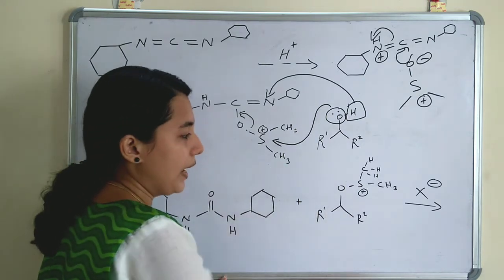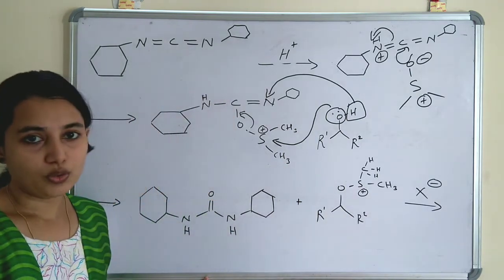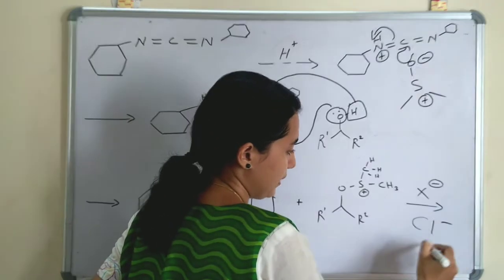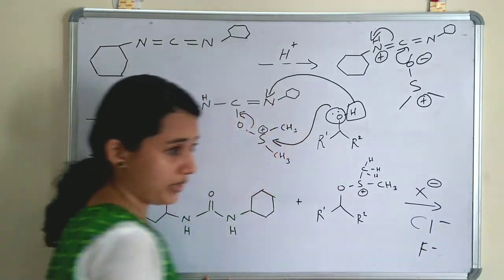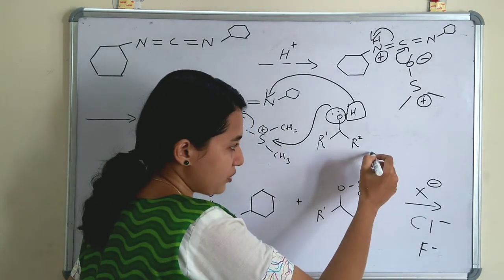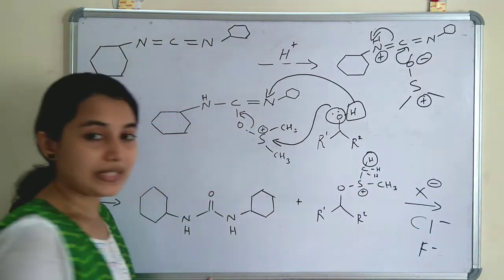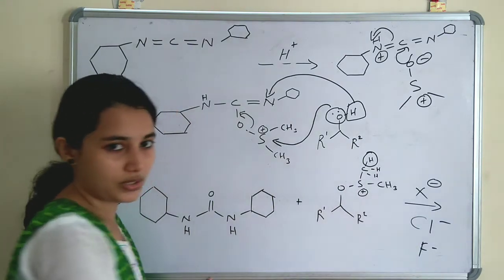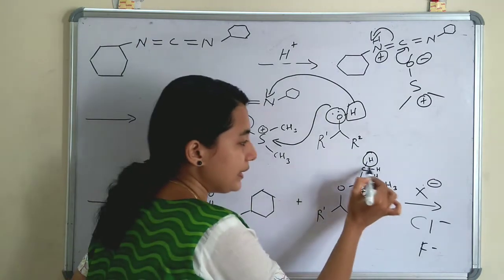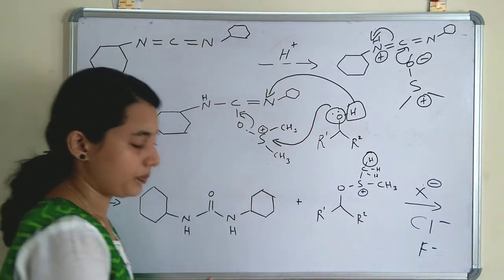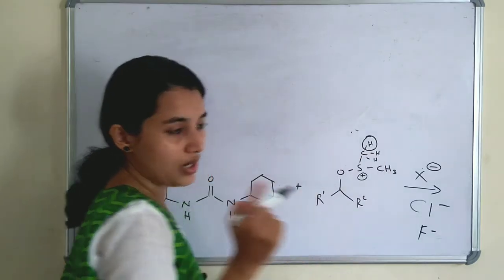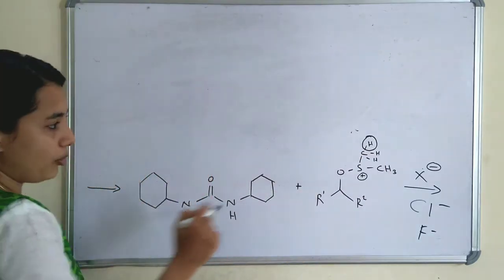X⁻ (for example Cl⁻, F⁻, or I⁻) comes into the reaction medium. X⁻ abstracts a hydrogen from one of the CH₃ groups of the sulfur intermediate. When X⁻ abstracts this hydrogen, a negative charge is formed on that carbon, giving the structure R₁–C(–O–S⁺–CH₂⁻)(–CH₃)–R₂.